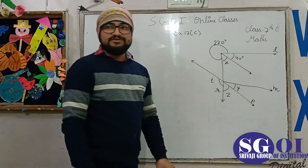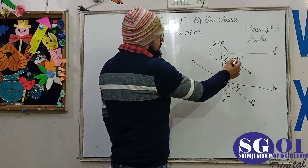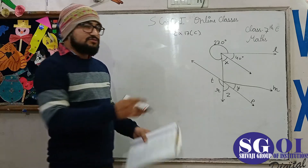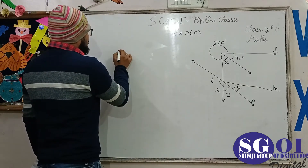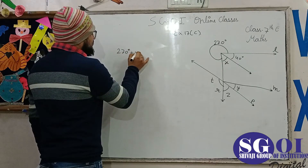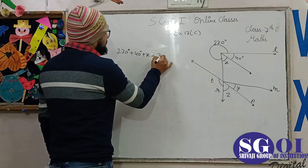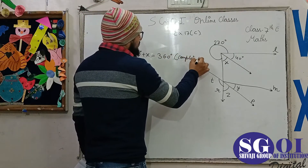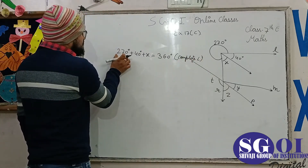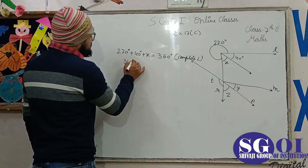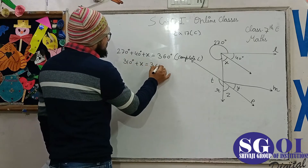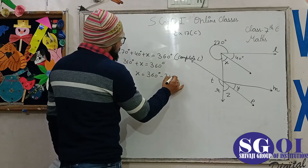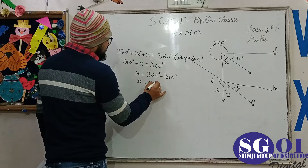We can clearly see this is a complete angle, and a complete angle is always 360 degrees. So we write: 270 + 40 + X = 360 degrees. This gives 310 + X = 360, therefore X = 360 - 310 = 50 degrees.